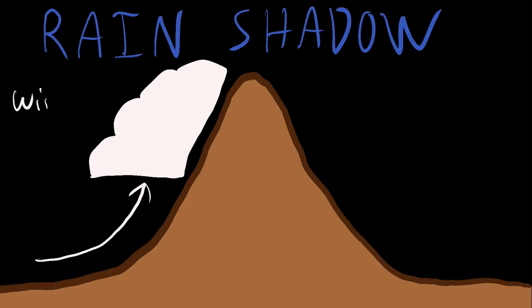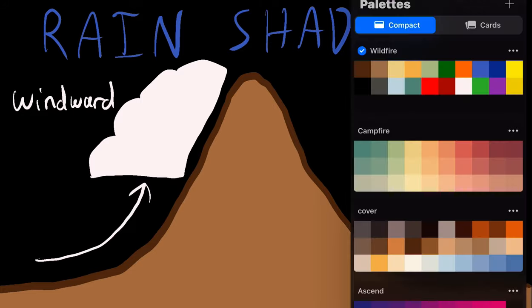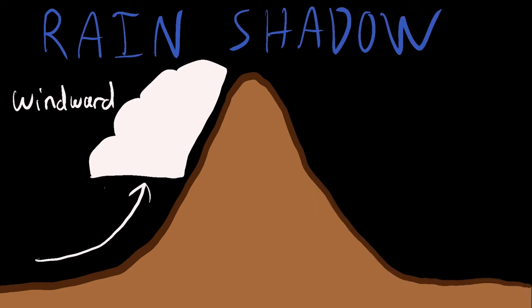So we'll label this windward. So that's because it's the side of the mountain range closest to the wind. So that's the air parcel moving up the left side of the mountain creates those clouds. And then in some cases, it can even create some of this rain that's going to be falling down on this side of the mountain range.